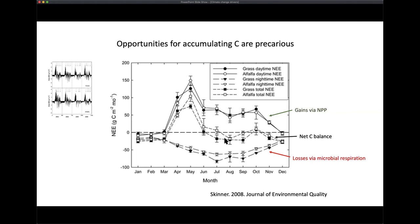The system is only a net carbon sink for two or three points in the year — in early spring, when plants are growing rapidly and NPP is high, yet it's still cool enough that microbial activity is lower. As it gets really warm in summer, the microbes become more active, and the system shifts to a net carbon source. Things we do in management that reduce the plant's ability to take up carbon during this spring window have a profound effect on whether the system is an overall carbon sink.